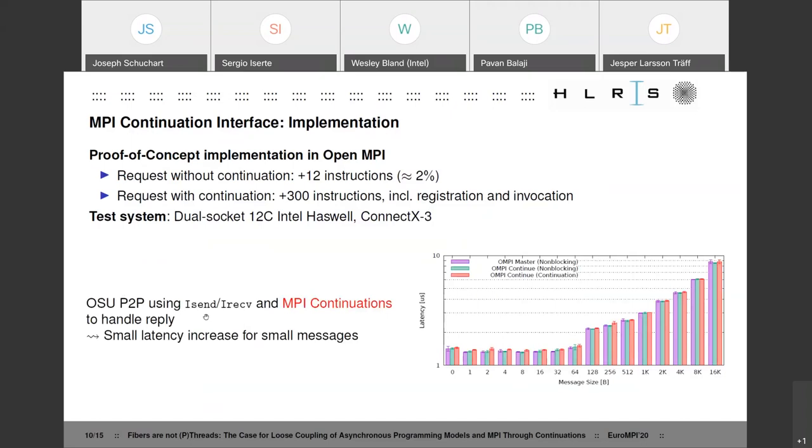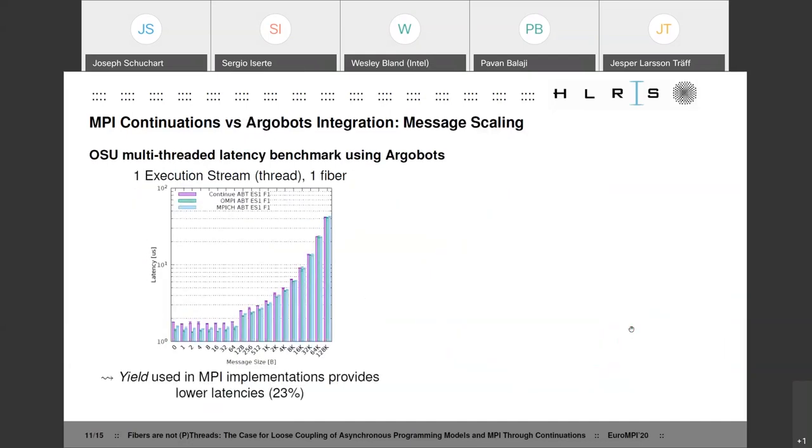First of all, we ported the OSU benchmark, the point-to-point latency benchmark, to using Isend and Ireceive instead of Send and Receive to measure the overhead of using continuations. So here the purple one is Open MPI master vanilla, the green one is Open MPI with continuations implemented but not used, and then the red one is Open MPI with continuations used to send the reply in the ping pong. And here we see for smaller messages, when using the continuation to handle the reply, there is a certain overhead, but that levels out if we increase the message size.